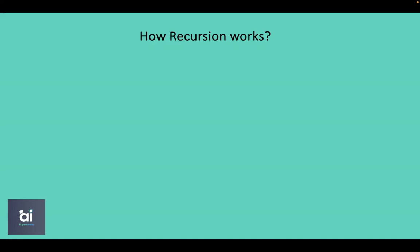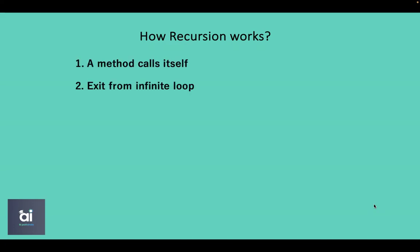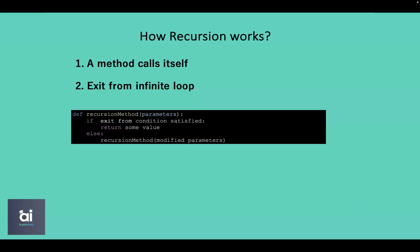Let me create a recursive method here. We need to take into account two conditions: a condition where the method calls itself with smaller values, and the second condition is an exit from an infinite loop. Taking these two conditions into account, the basic syntax of recursion will be like this.